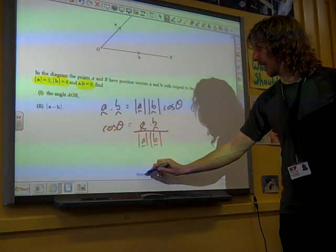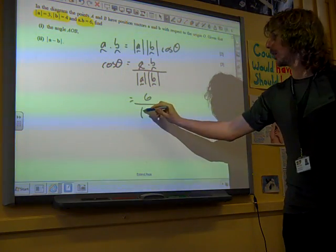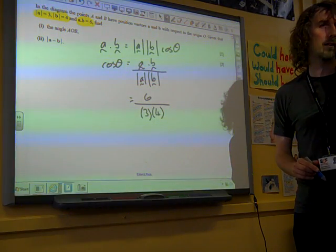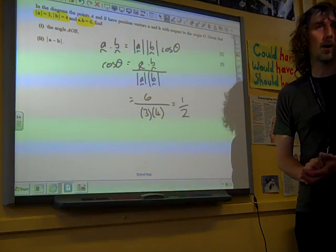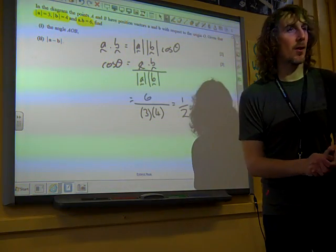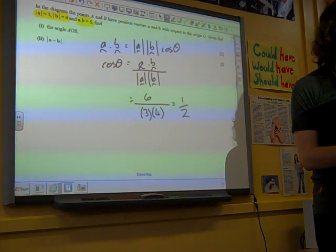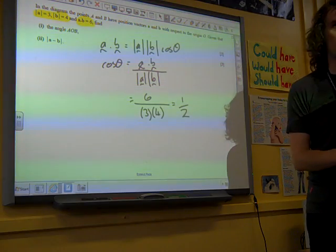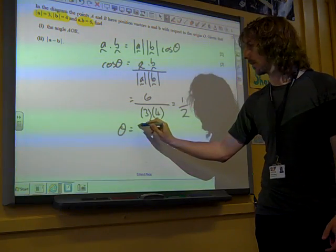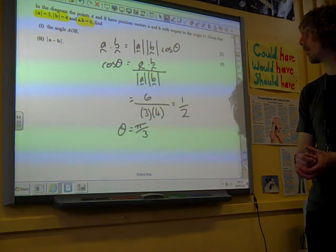So, a dot b is given as being 6, the magnitude of a is 3, the magnitude of b is 4. 6 divided by 12 is a tricky thing to work out, it's often equal to a half. So we've got cos theta is a half. It didn't specify how they wanted the angle presented, so we can give it in degrees or in radians. That's inverse cos of a half is pi by 3. Okay, so we could write that as being 60 degrees if we wanted to, and that's two marks for that.